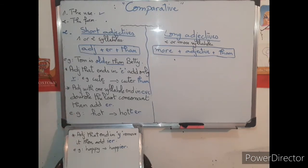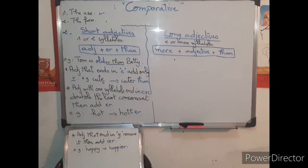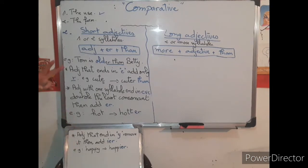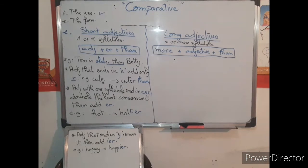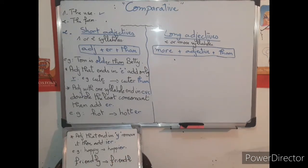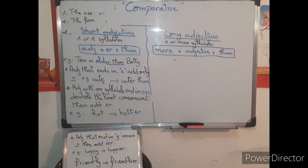So those are three major spelling rules: the general rule is to add -ER; if the adjective ends in E, add only R; if it ends in CVC, double the last consonant then add -ER; if it ends in Y, remove Y and add -IER. Note that two-syllable adjectives like 'friendly' can be treated as either short or long — 'friendlier' or 'more friendly than' are both acceptable.